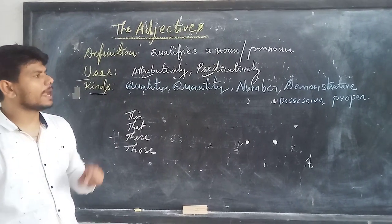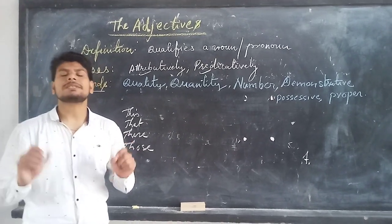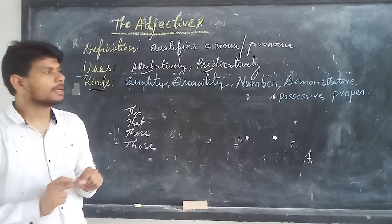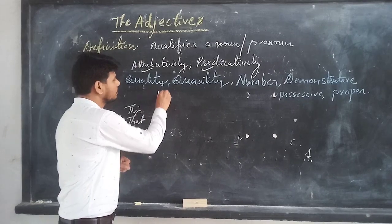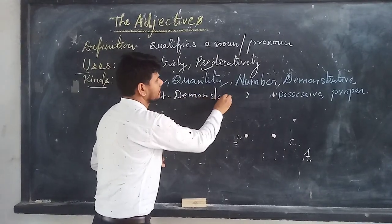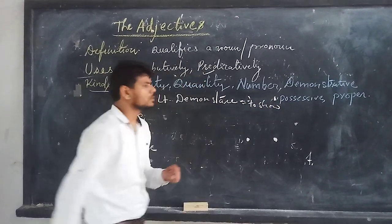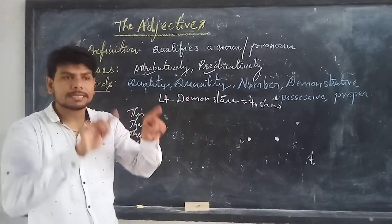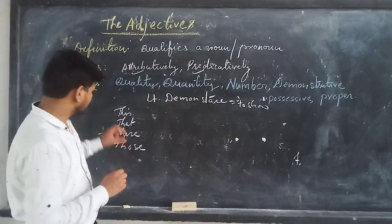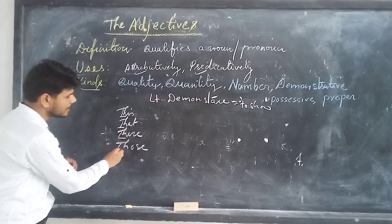Next, we will talk about the adjective of demonstration, also called the demonstrative adjective. The word 'demonstrative' comes from the Latin word 'demonstare,' meaning to indicate or to show something. There are four kinds of demonstrative adjectives: 'this,' 'that,' 'these,' and 'those.'